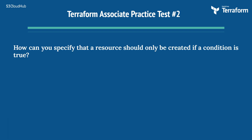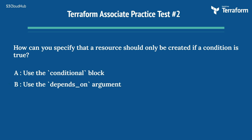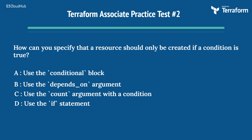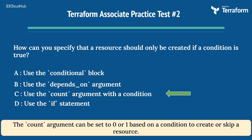The second question is: how can you specify that a resource should only be created if a condition is true? Option A: use the conditional block. Option B: use the depends_on argument. Option C: use the count argument with a condition. Option D: use the if statement. The right answer is Option C: use the count argument with a condition. The count argument can be set to zero or one based on a condition to create or skip a resource.